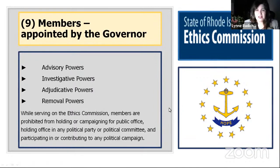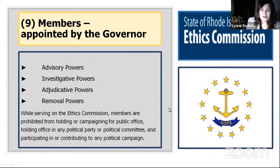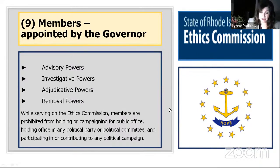Take a look at how powerful the Ethics Commission is: advisory, investigative, adjudicative, and even in some cases, removal powers — though those have rarely been used, since people in serious jeopardy typically voluntarily leave. While serving on the Ethics Commission, members are prohibited from holding or campaigning for public office, holding office in any political party or committee, or participating in or contributing to any political campaign.